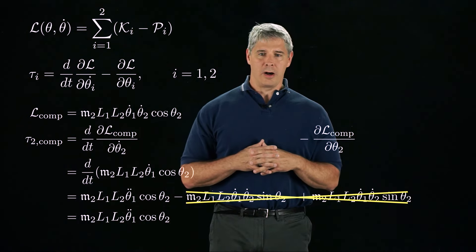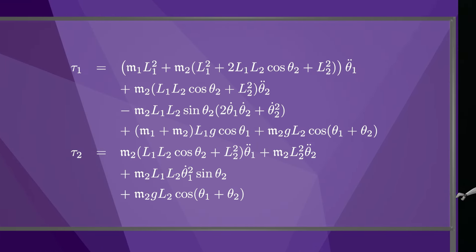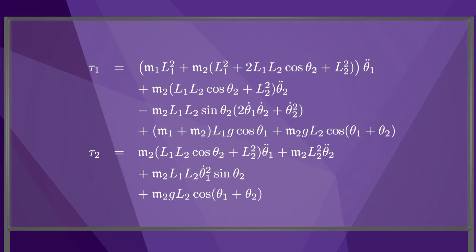If we do these calculations for all the terms in the Lagrangian, we get these equations of motion. Even for a simple 2R robot, the equations are rather complicated. Notice that some terms are linear in the joint acceleration θ̈. Some terms do not depend on the joint acceleration, but instead depend on a product of joint velocities, like θ̇₁ times θ̇₂ or θ̇₂ squared. And some terms have no dependence on the joint velocities or accelerations.